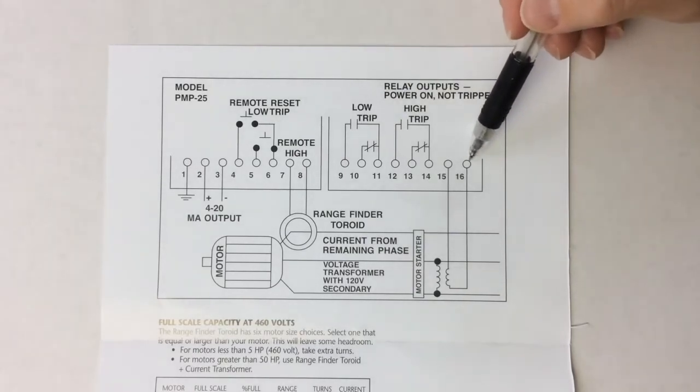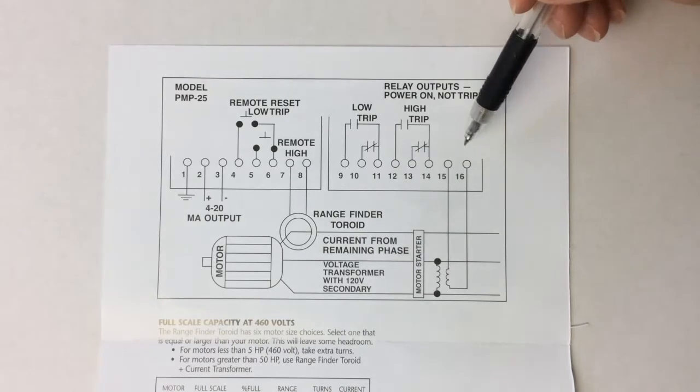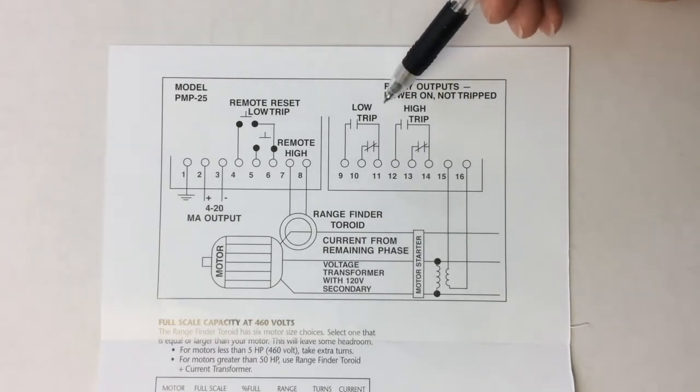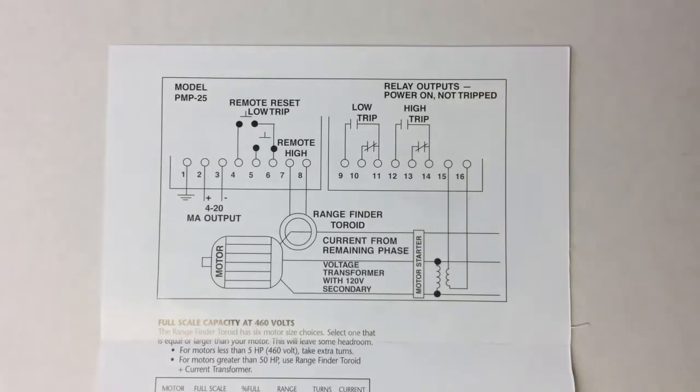When 120 volts is switched on to the PMP25, the output relays energize and the contacts move to the state shown. This is for fail-safe operation. If the 120 volts is lost or a failure occurs, the contacts will fail to the tripped condition, which is the shelf state of the relay contacts.